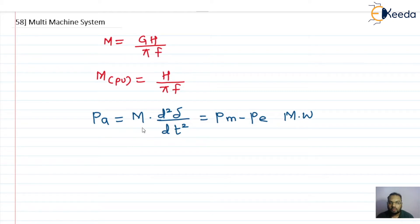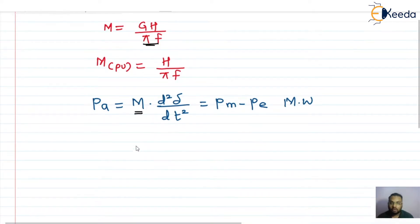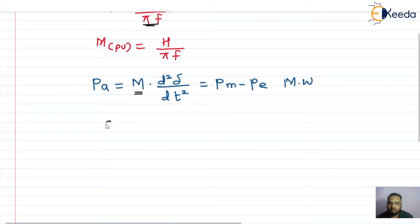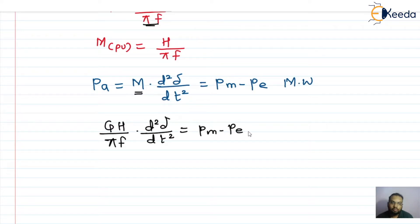Now we can replace M with GH/πf. So substituting, we get: (GH/πf) × d²δ/dt² = Pm − Pe, still in megawatts. Now suppose we want to write this in terms of per unit.